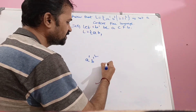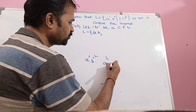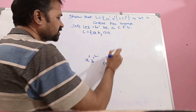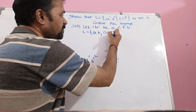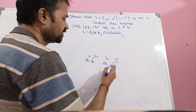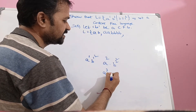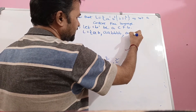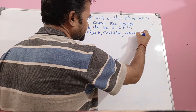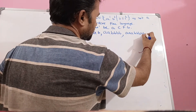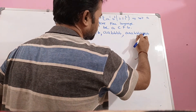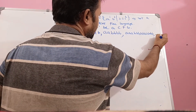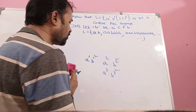Next, let us assume i = 2. So a^2 · b^(2²) = a^2 · b^4, which we can write as 'aabbbb'. Next, i = 3: a^3 · b^(3²) = a^3 · b^9, giving 3 a's and 9 b's. Likewise, we can have n number of strings in the language.